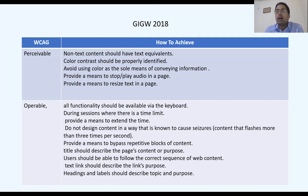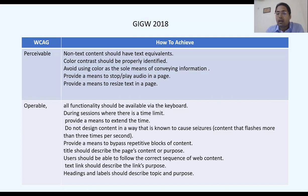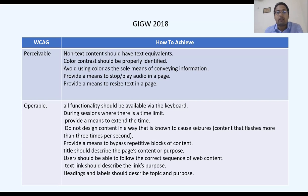For example, if someone has color blindness and you say 'click the red button for registration, blue for de-registration, green for payment,' that person cannot identify the colors. This violates the perceivable principle.